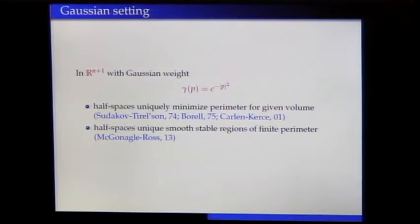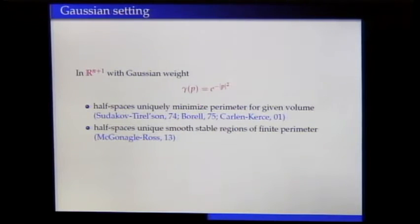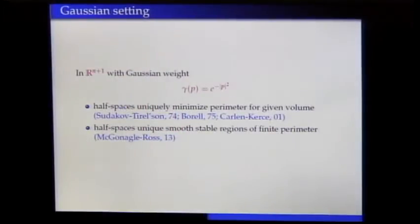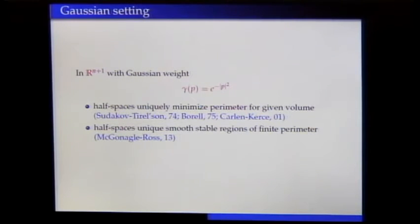Unfortunately, this approximation scheme does not provide uniqueness of minimizers. Uniqueness was achieved many years later by Carlen and Kerce, who finally showed that any isoperimetric region must be equivalent to a half space. Very recently, McGonagall and Ross — two students of Minicozzi — used the second variation formula together with suitable volume-preserving deformations to characterize half spaces as the unique smooth stable regions of finite perimeter. Unfortunately, they did not deal with regions having singularities at the boundary, so the solution to the isoperimetric problem cannot be deduced directly from their result.